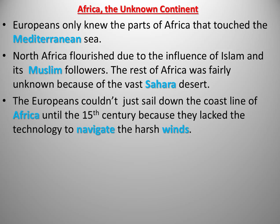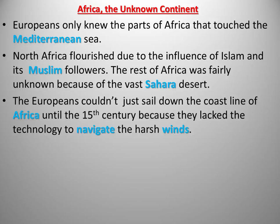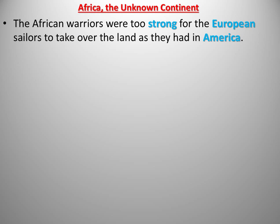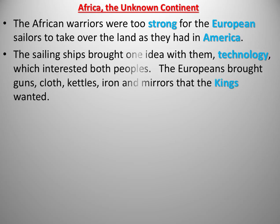Europeans didn't have the ability to sail around Africa or along its coastline until the 15th century, late into the 1400s. They learned to navigate and handle harsh winds and high seas, and that's when they made their discoveries and interactions with the coastline of Africa. What they did find, when Vasco da Gama was able to sail around the tip of South Africa and head towards India and Asia, was that the people they ran into there were extremely powerful and strong. They had great warriors, and Europeans couldn't just do what they had done in America — take the land from the natives. That was not going to happen in Africa.